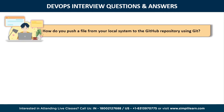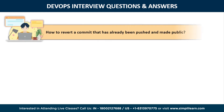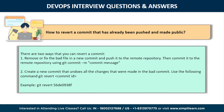The next question is: how do you push a file from your local system to the GitHub repository using Git? First, connect the local repository to your remote repository using: git remote add origin [URL]. The second step is to push your file to the remote repository. For reverting a commit that has already been pushed and made public, there are two ways: remove or fix the bad file in a new commit and push it to the remote repository, or create a new commit that undoes all the changes made in the bad commit using the git revert command.